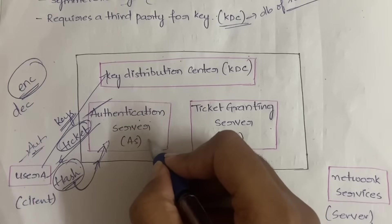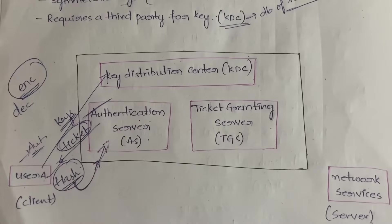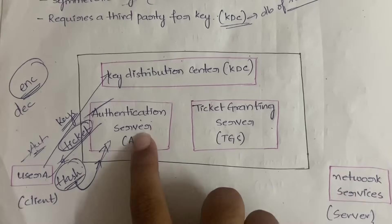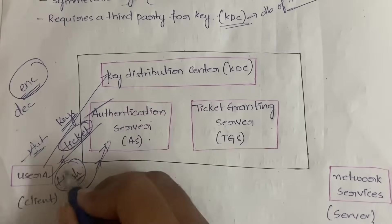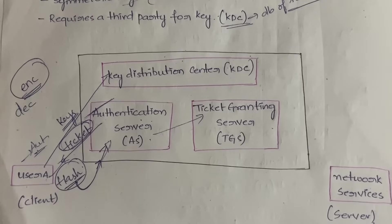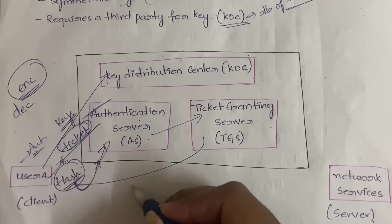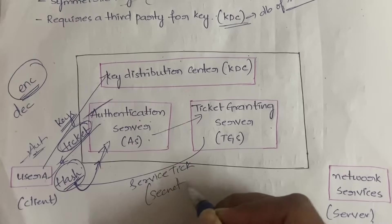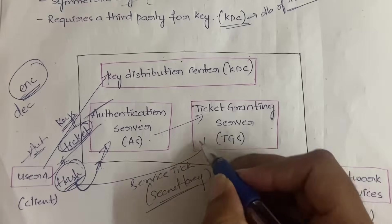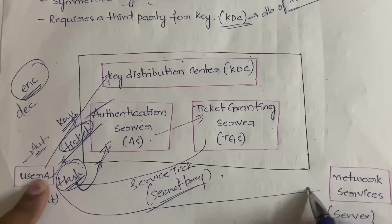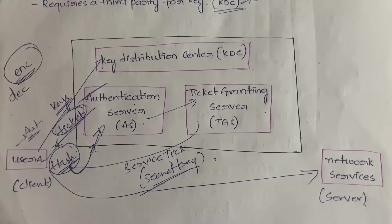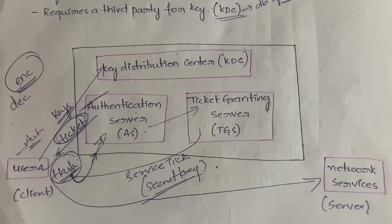If authentication is successful, the Authentication Server will give the service ticket. The service ticket is different from the initial ticket — the initial ticket was for authentication purposes. The service ticket is given to the Ticket Granting Server, which then gives the service ticket — which is nothing but the secret key — to the user. Using this secret key, the user can communicate with the network.